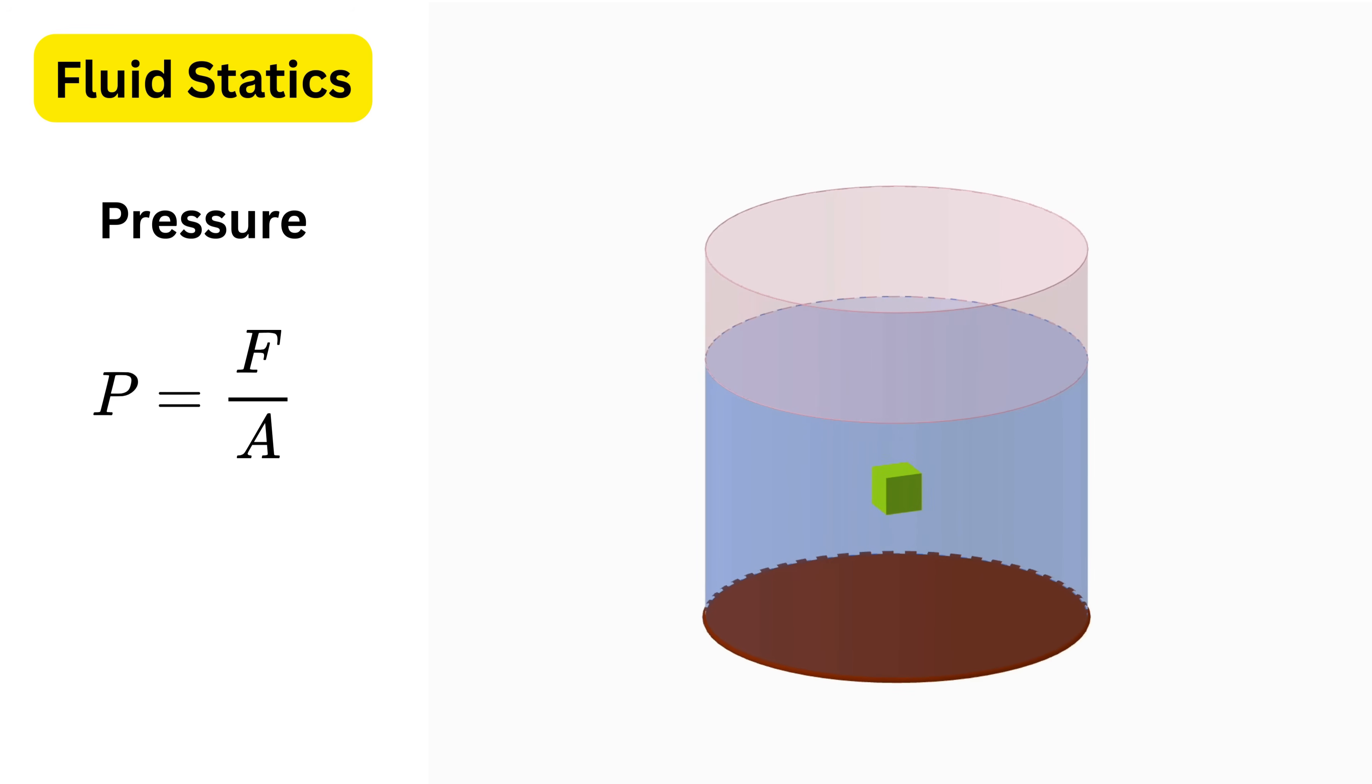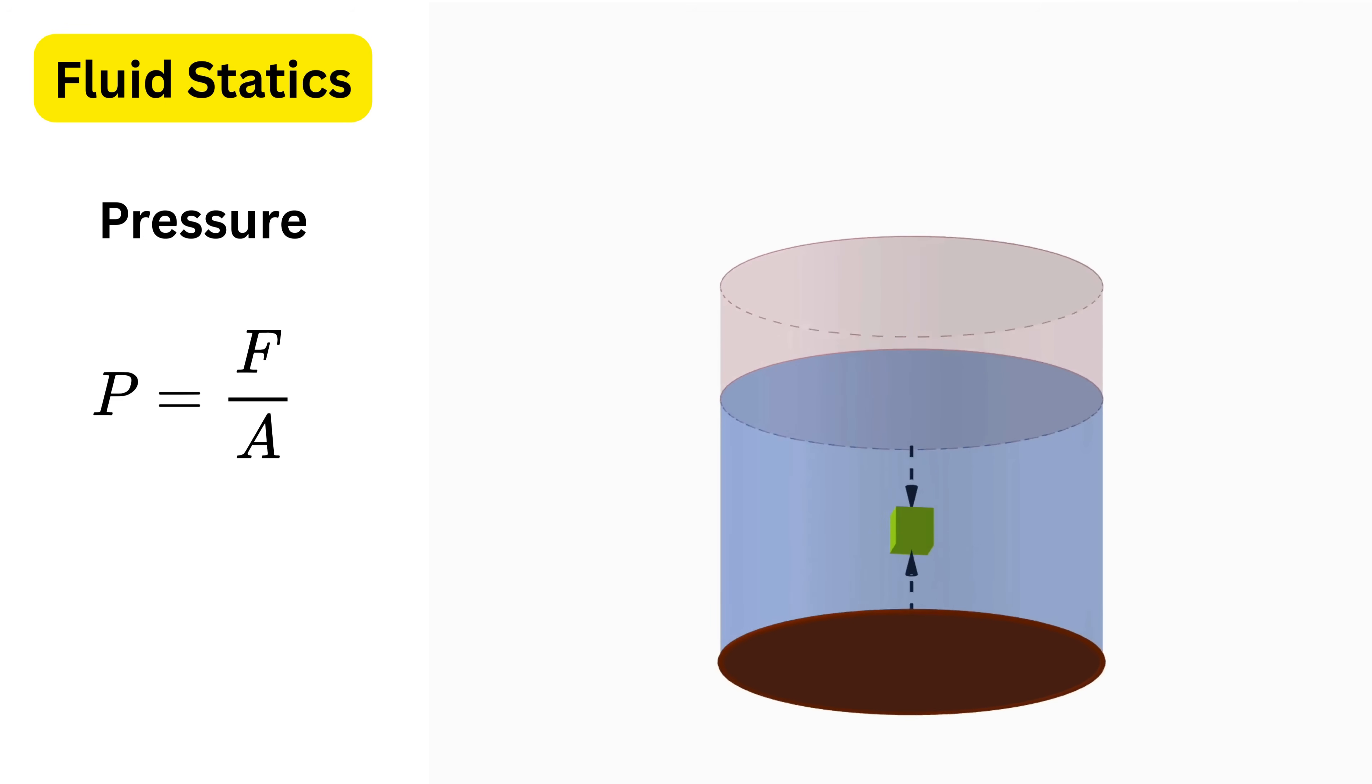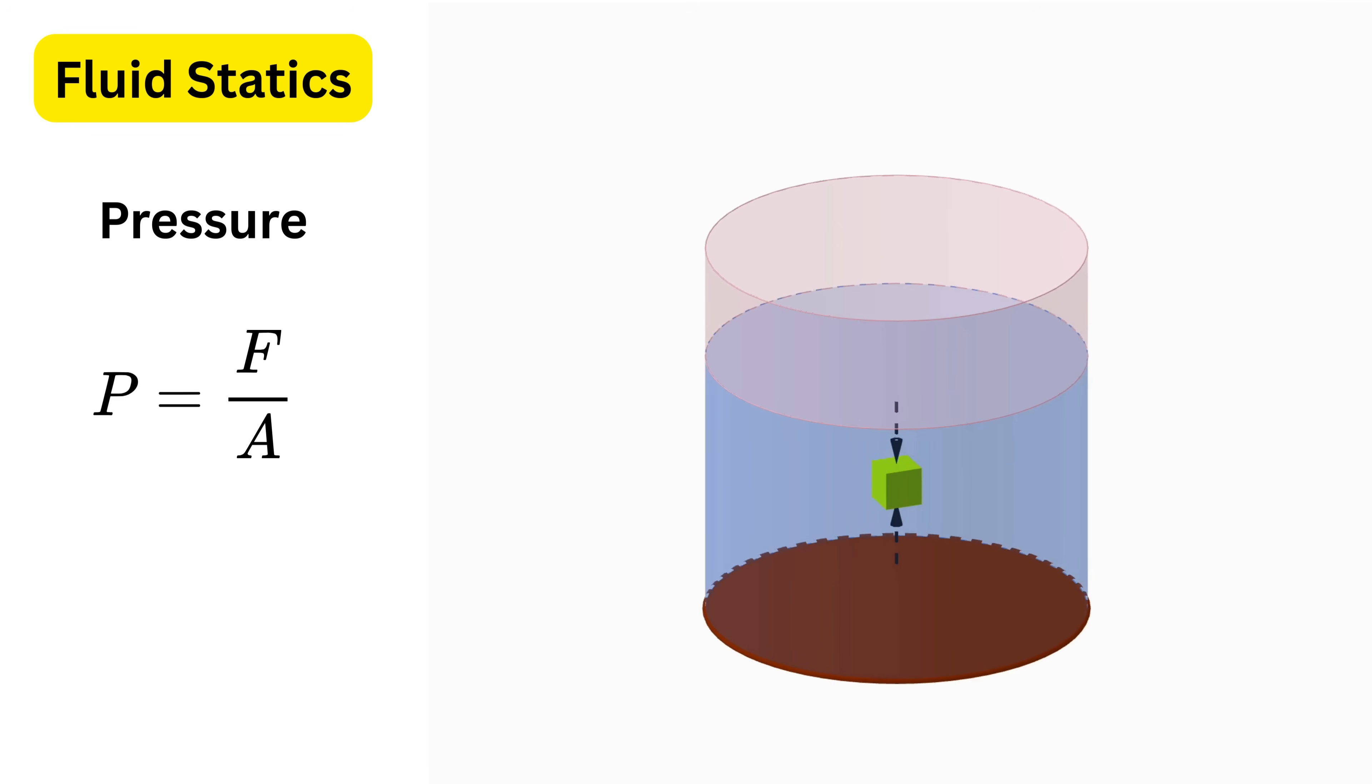So the pressure on all faces of the cube are equal in magnitude. On the top face of the cube, the fluid pressure acts perpendicular to the surface, pushing straight downward. On the bottom face of the cube, the fluid pressure also acts perpendicular to the surface, but it pushes straight upward.